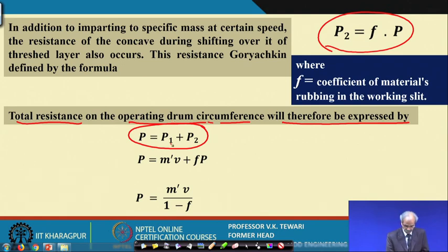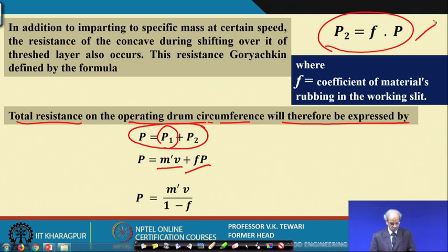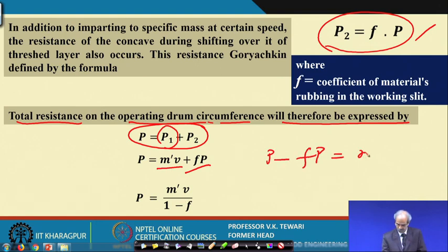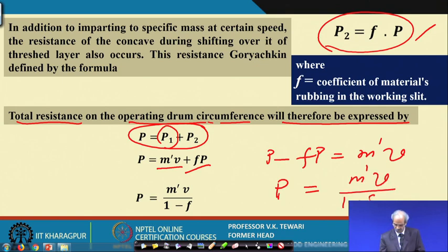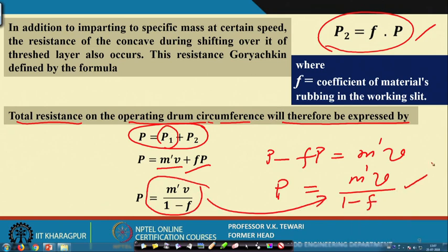Combining P₁ = m'V and P₂ = F·P, we get: P - F·P = m'·V, therefore P = m'·V / (1 - F). This is exactly how the total force on the drum is derived, and this is the theory that Goryachkin developed — a concept worth appreciating and understanding.